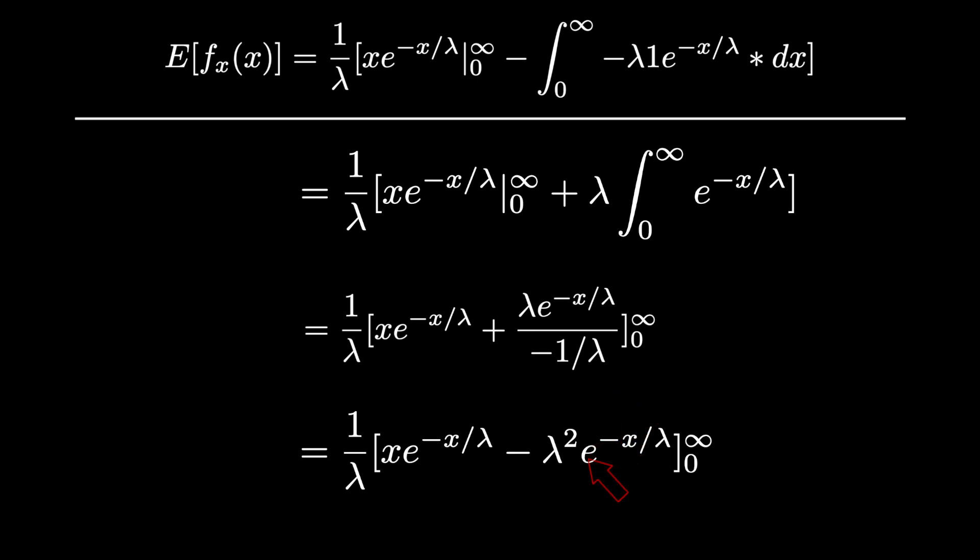Then we can simplify this by flipping that negative 1 over lambda and getting our next equation line.